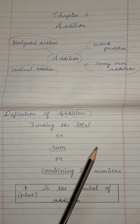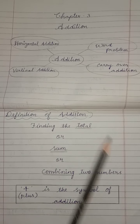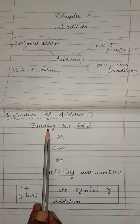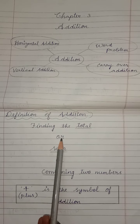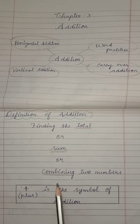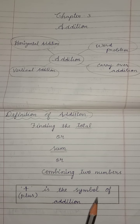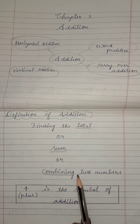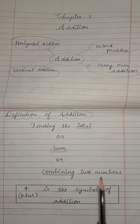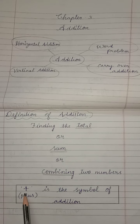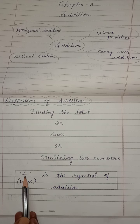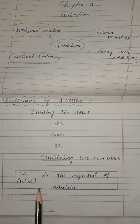Now, see the Definition of Addition. What is meant by Addition, children? Addition means finding the total, or sum, or combining two numbers. The symbol for Addition is plus. Plus is the symbol of Addition.